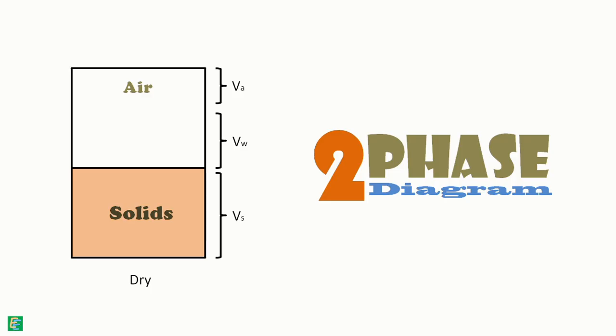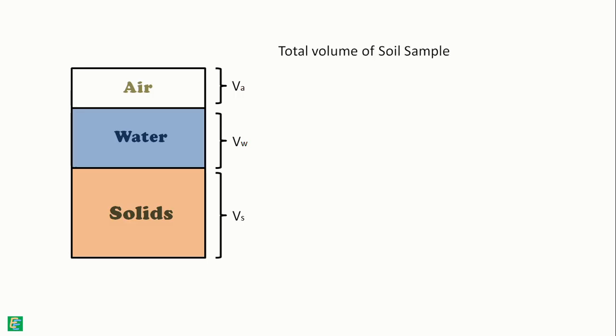Now from the general three-phase diagram, we can say the total volume of soil sample V is equal to the sum of volume of solids Vs plus volume of water Vw plus volume of air Va.